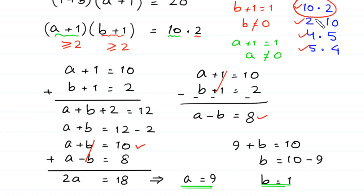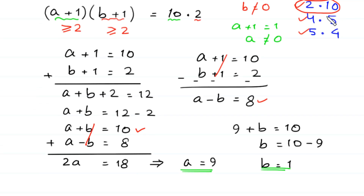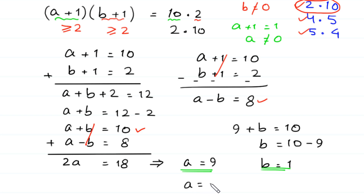For the second case, 2 times 10: (a plus 1) times (b plus 1) equals 2 times 10. The values of a and b are simply exchanged from the previous case: a equals 1 and b equals 9. This is the second pair of solutions.